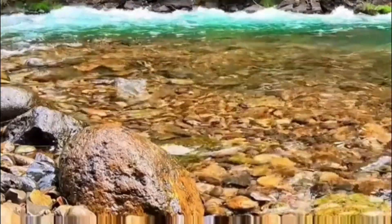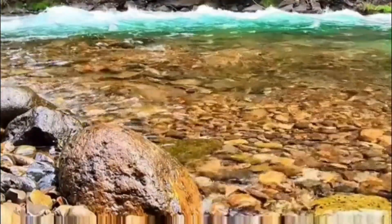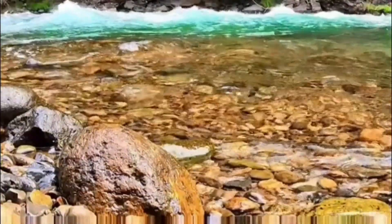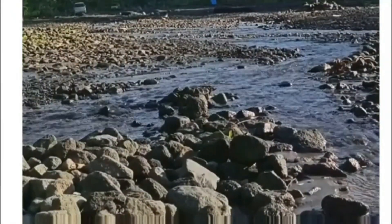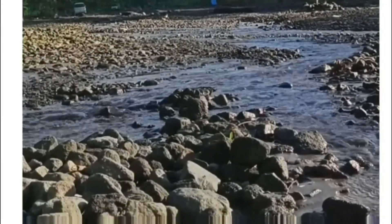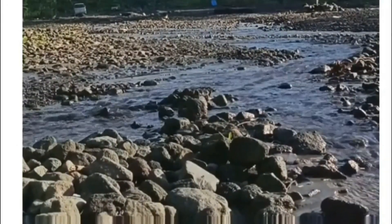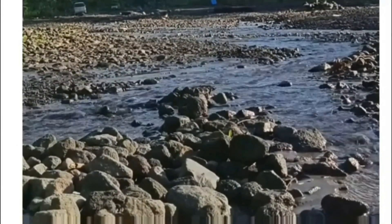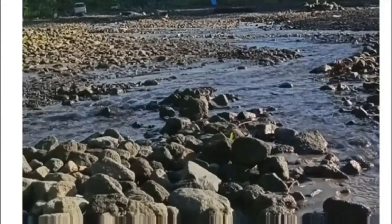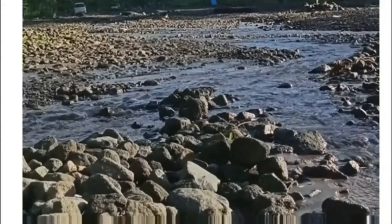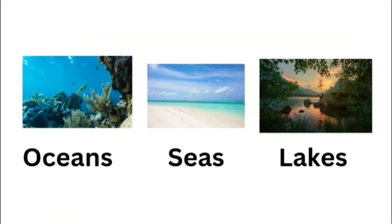A delta is a landform created by the deposition of sediments carried by a river as the flow leaves its mouth and enters slow-moving water. In simple words, when a river flows faster it carries a lot of sediments and rocks. As soon as the river flow enters slow-moving water, the sediments, rocks, sand, and clay in the river get deposited.